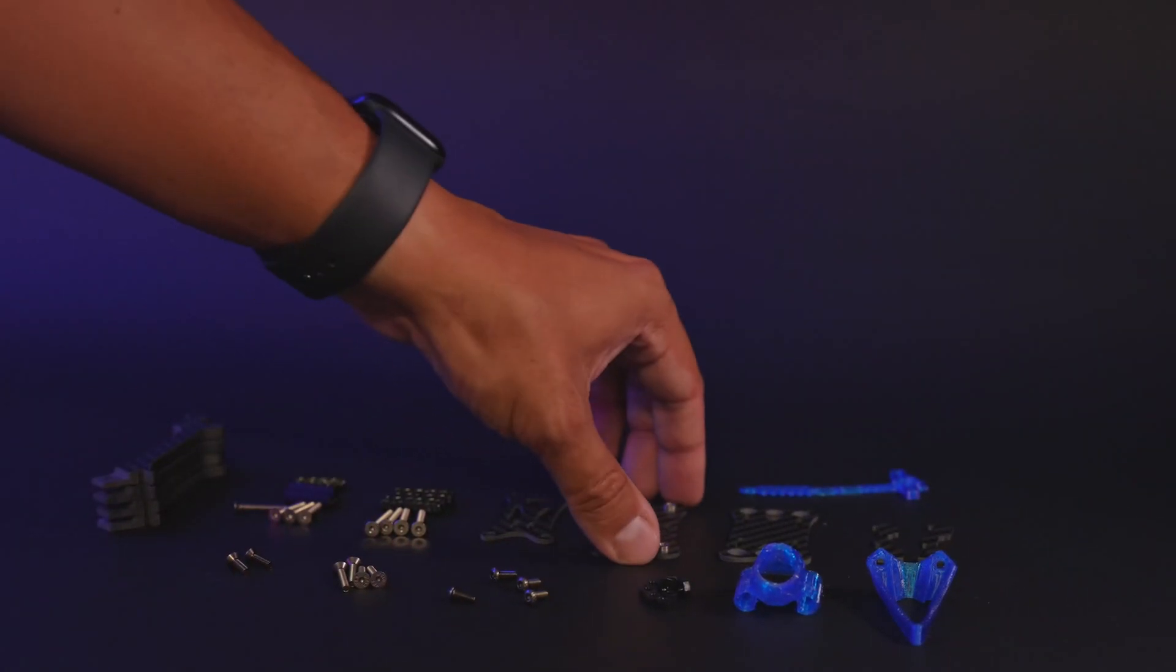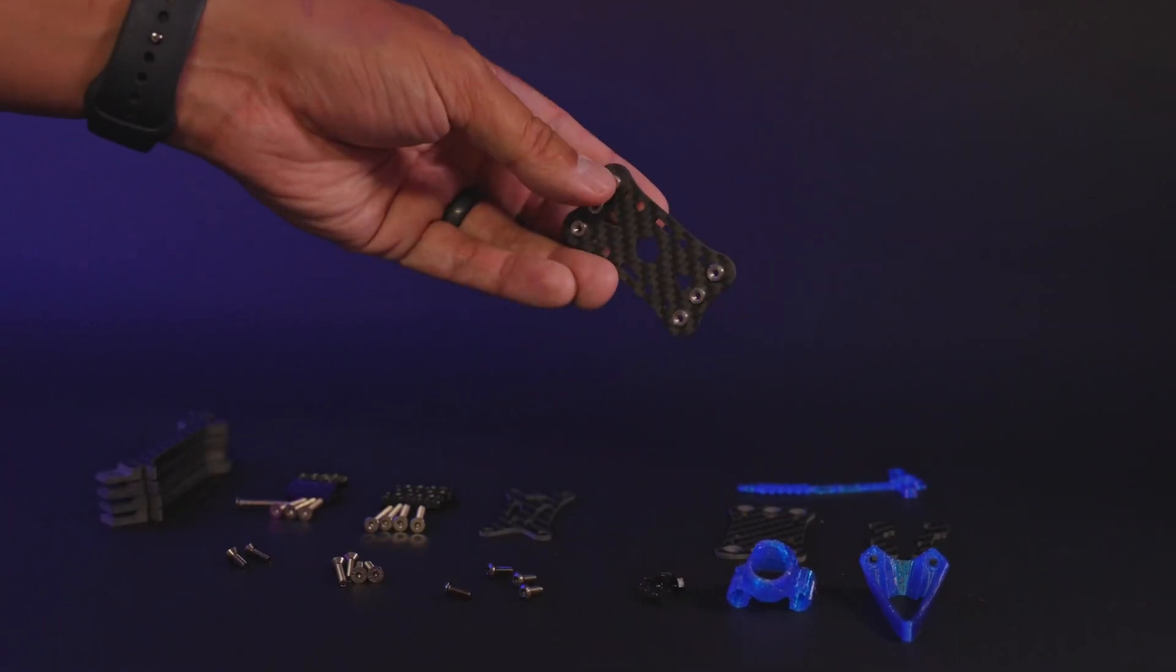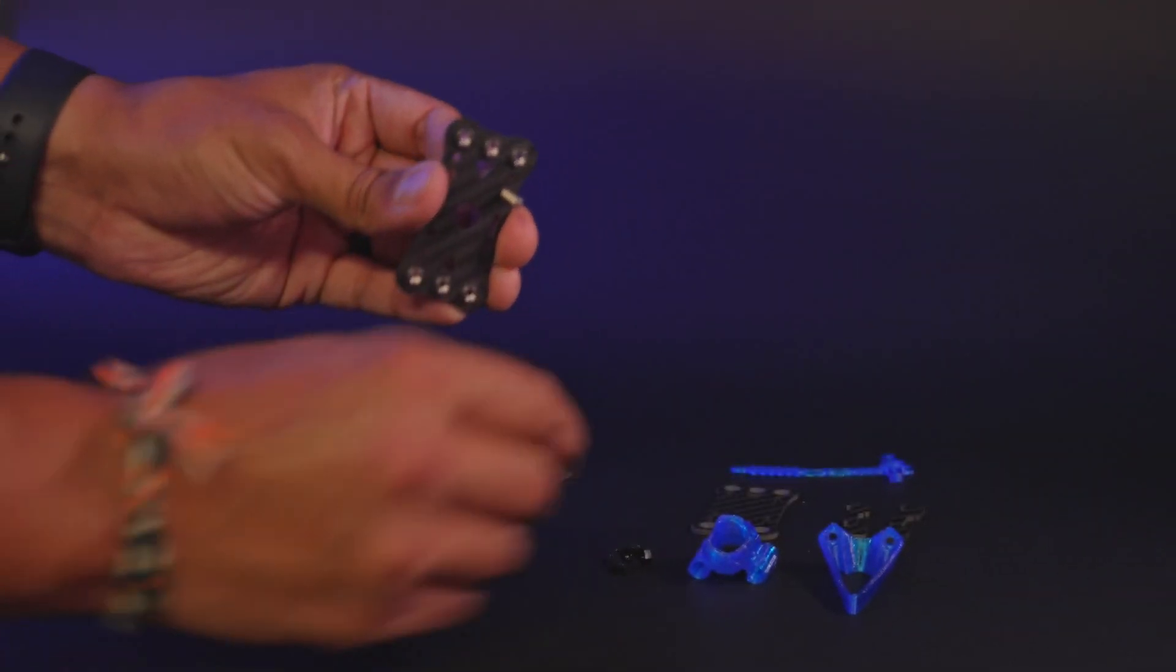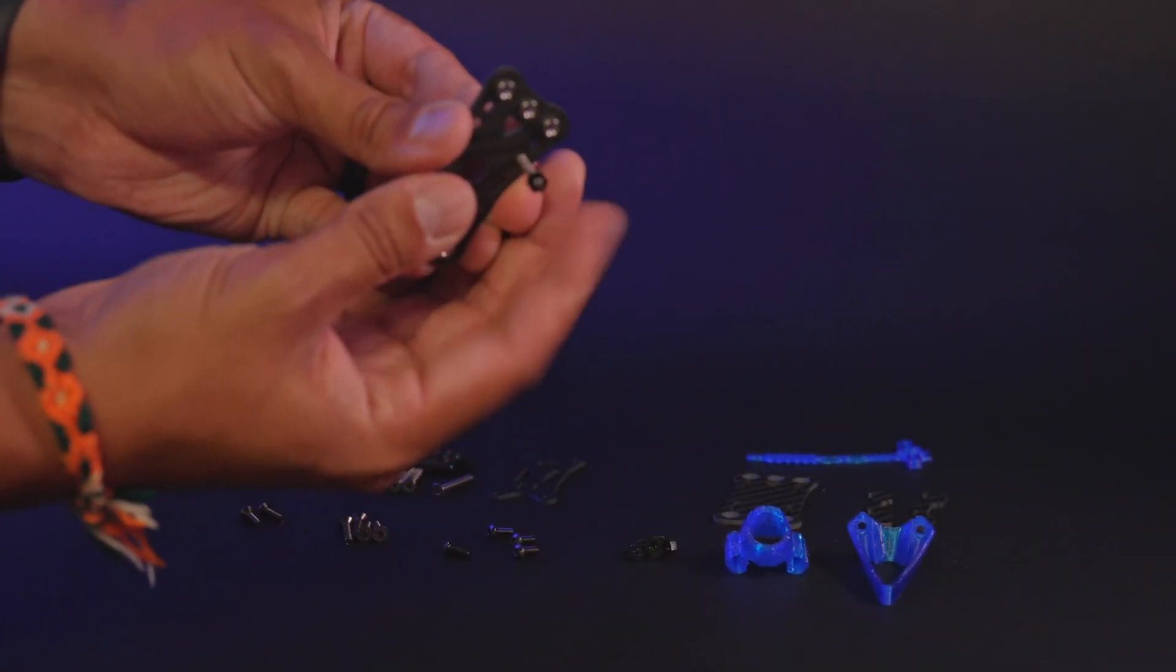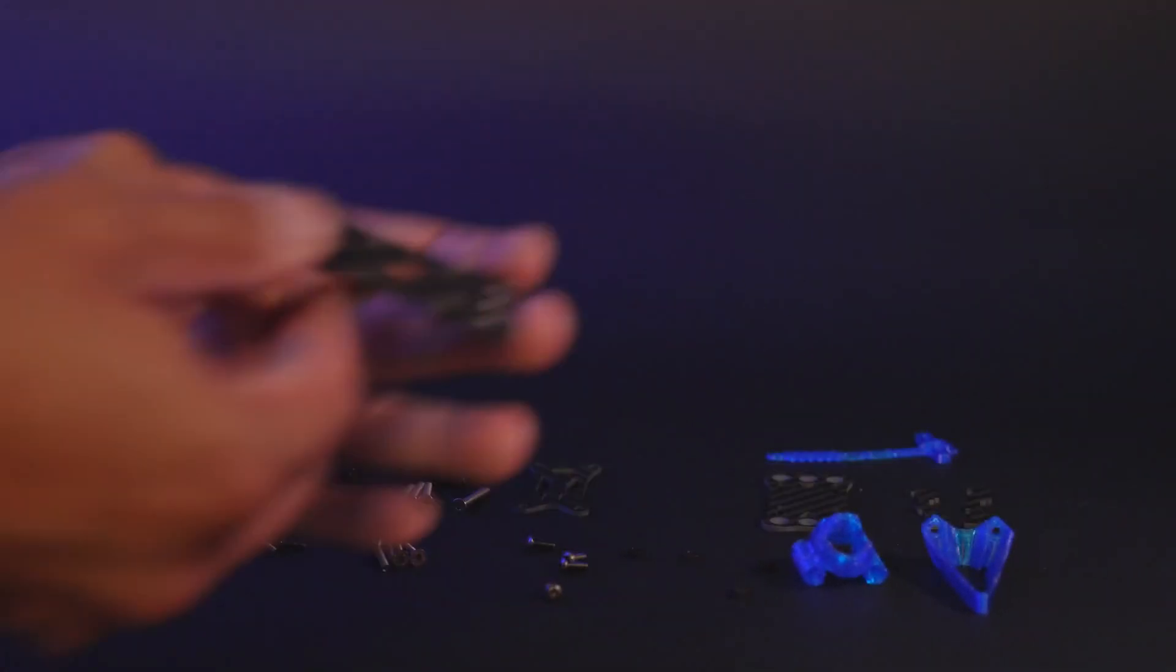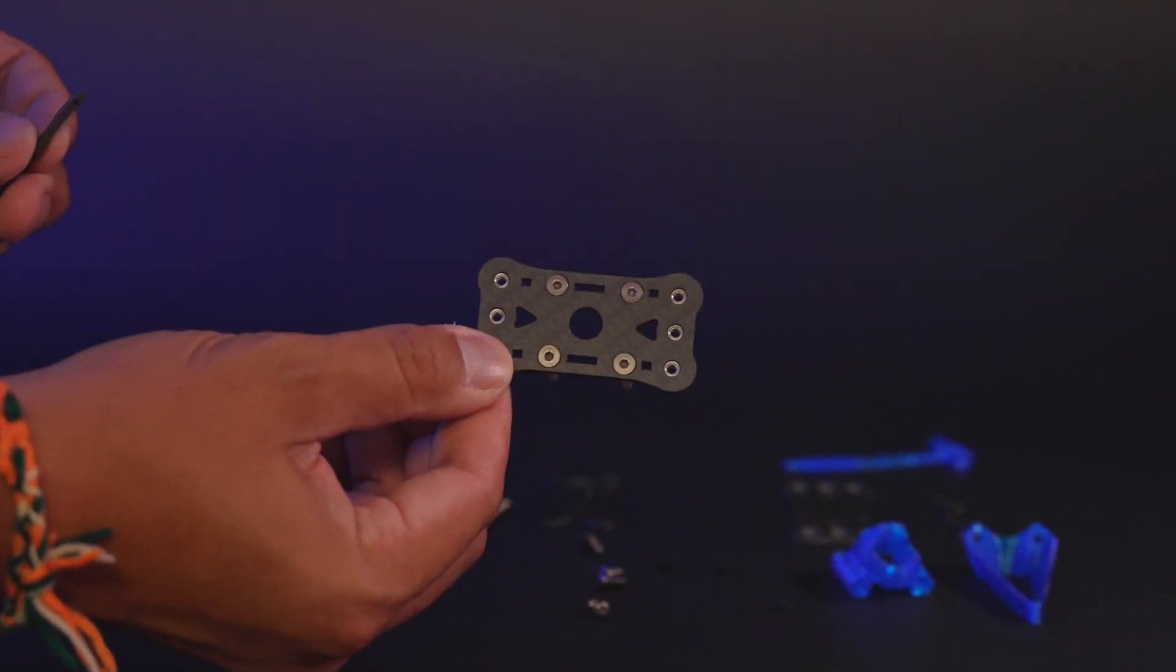Then you're going to install those stack screws into the stack holes, and they are 20 by 20 millimeter. Then you're going to grab your M3 nylon nuts, install those, and you're going to repeat this three times until all of your stack screws are installed.